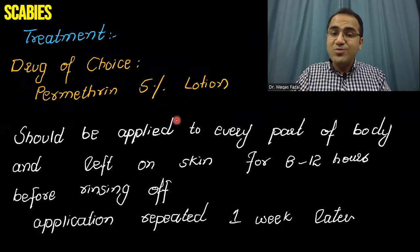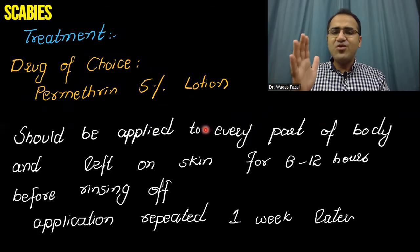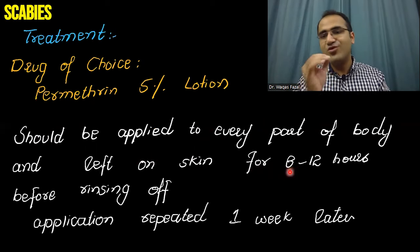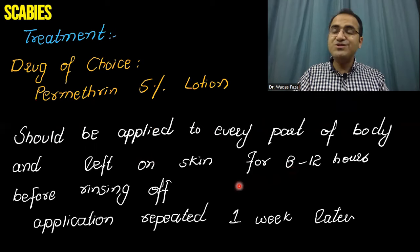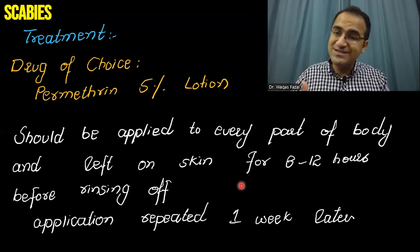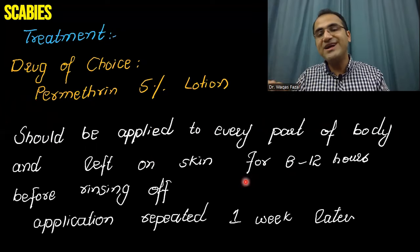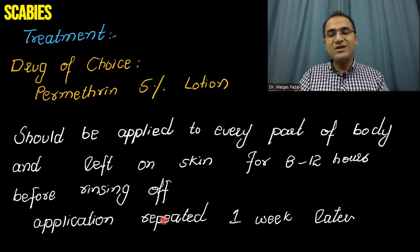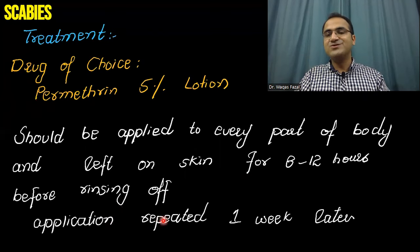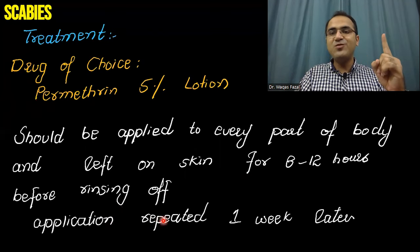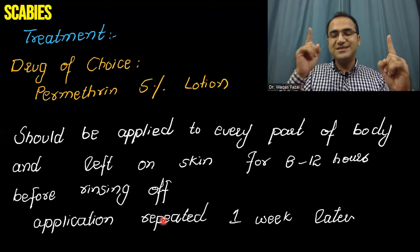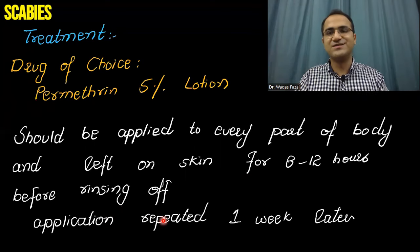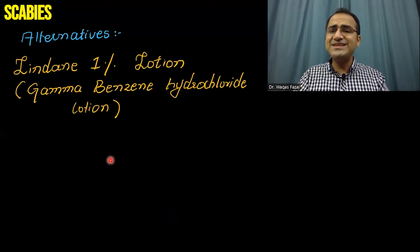Permethrin should be applied to every part of the body and left on the skin for 8 to 12 hours before rinsing off. The application must be repeated once again one week later — so the patient applies it at presentation and again one week after, washing it off after 8 to 12 hours each time.